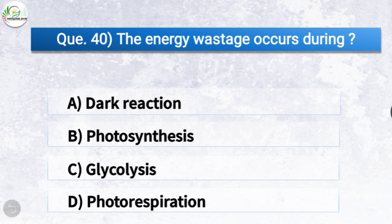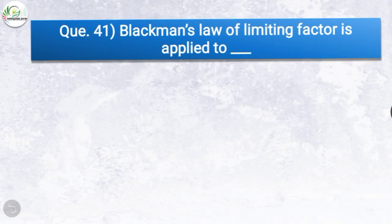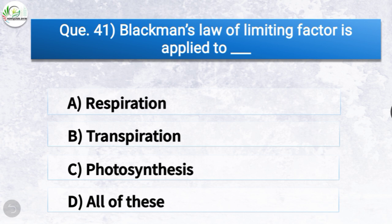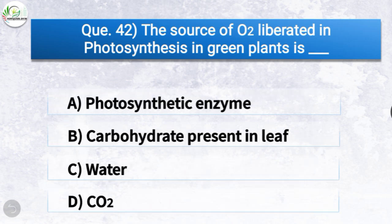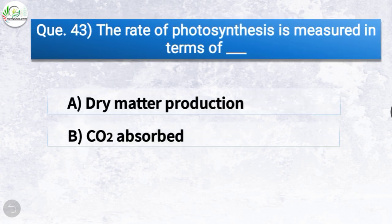Question 40: Energy wastage occurs during what? Options: dark reaction, photosynthesis, glycolysis, or photorespiration. The correct answer is option D — photorespiration. Question 41: Blackman's law of limiting factor is applied to what? Options: respiration, transpiration, photosynthesis, or all of these. The correct answer is option C — photosynthesis. Question 42: The source of oxygen liberated in photosynthesis in green plants is what? The correct answer is option C — water.